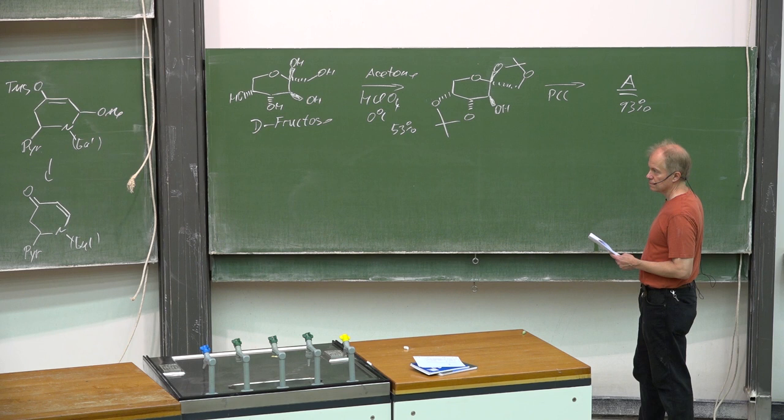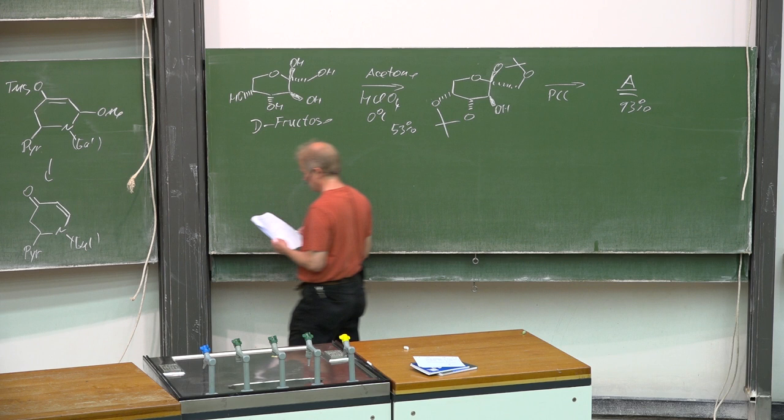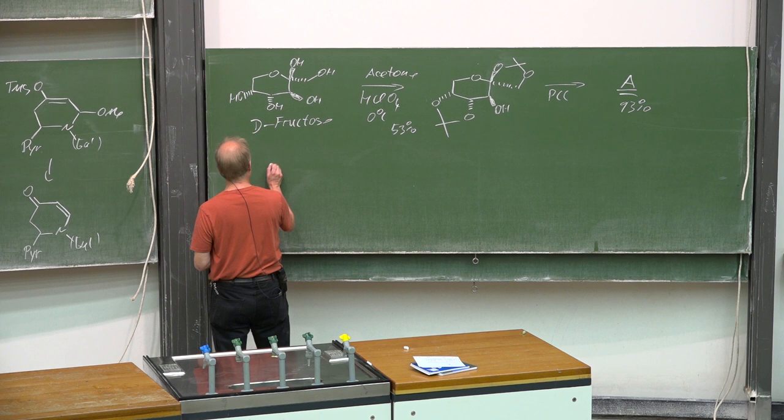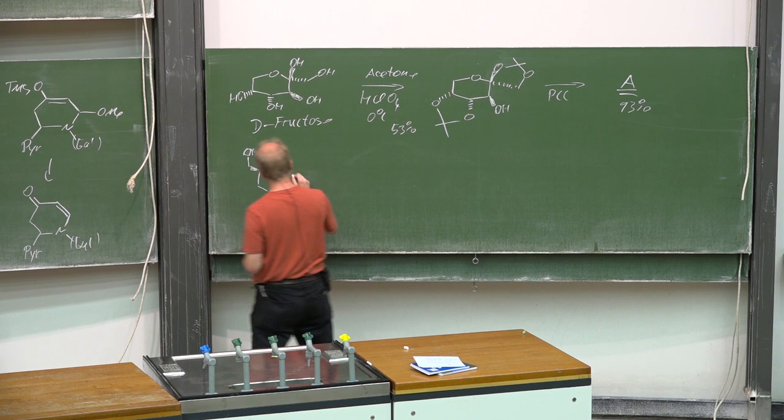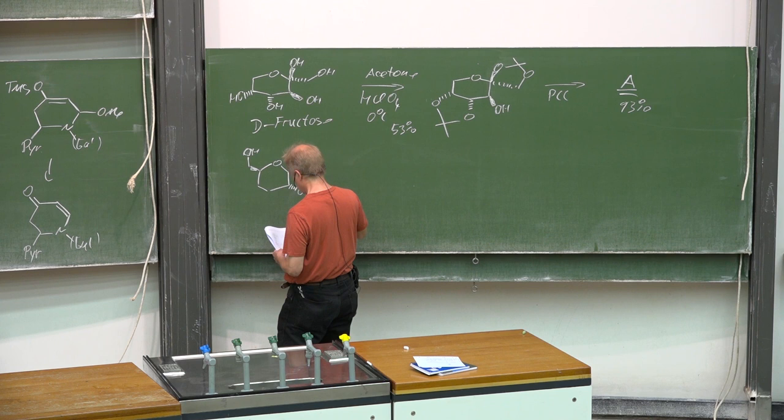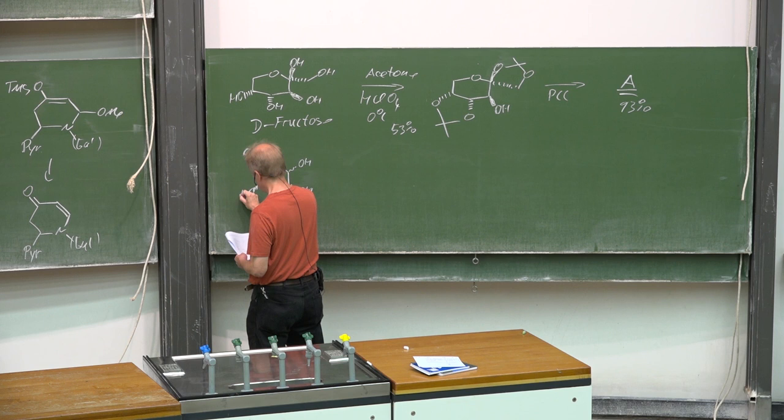How do you get to catalyst A? Just oxidation, for instance with PCC. That then gives catalyst A in 93% yield.